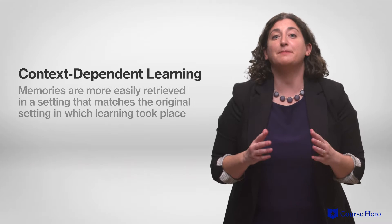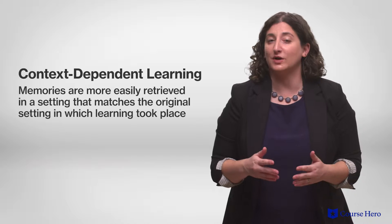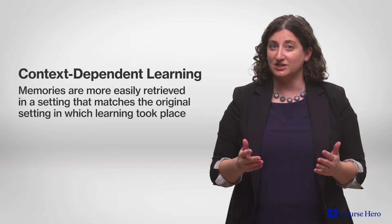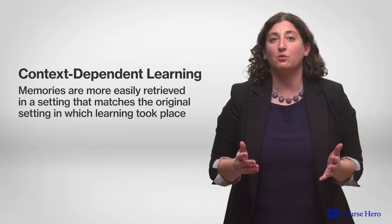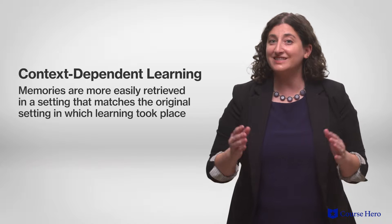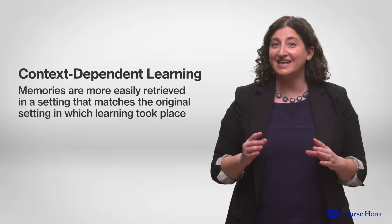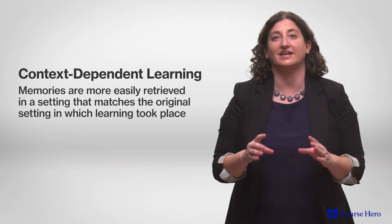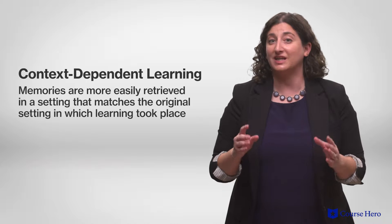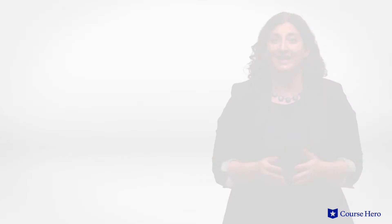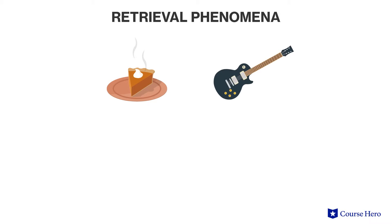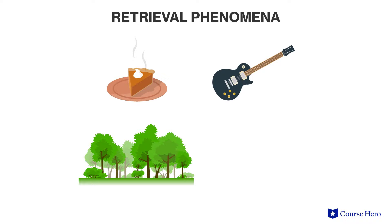Context-dependent learning, which is also called the encoding specificity principle, describes the phenomena where memories are more easily retrieved in a setting that matches the original setting in which learning took place. In fact, anything present at the time learning occurred can serve as contextual cues for retrieval, including smells, sounds, sights, and the emotional state of the learner.